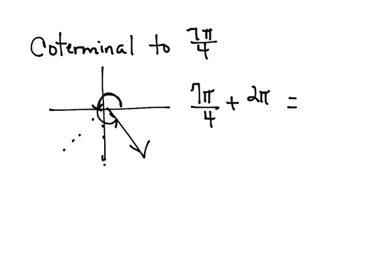So to add 2 pi, I would have to get a common denominator, and that common denominator I'm going to get is 4, which would make this be 8 pi over 4. So when I add those together, I get 15 pi over 4.